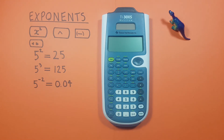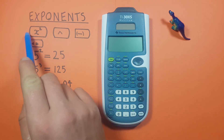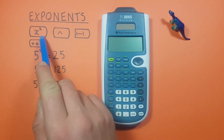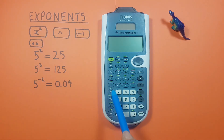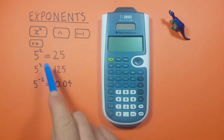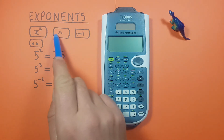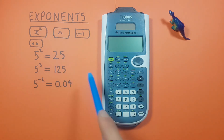To do this we'll be using the x squared key — it looks like this, located here — and the caret key, or exponent key, that looks like this, located here.